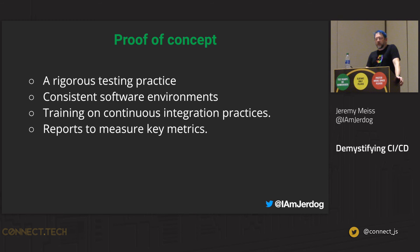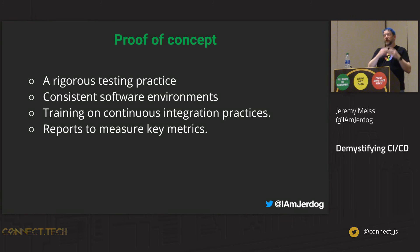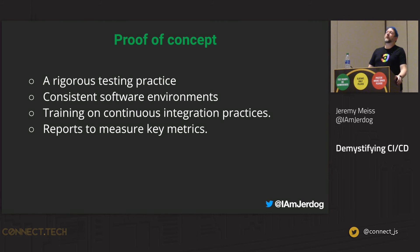A great way to get started is a proof of concept — take a team, start putting these principles into play. Make sure you get the rigorous testing practice in place, ideally with automated tests. Keep consistent software environments from testing to production. Train on continuous integration practices continually. Use reports to measure key metrics. Once your teams start committing regularly in small increments, they'll see how much easier it is to be responsive to bugs. As they resolve those bugs faster, they'll be able to deliver features even faster — giving the team the momentum to integrate continuous integration across your workflows and your organization.